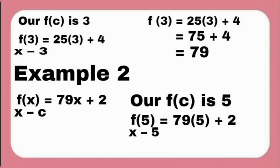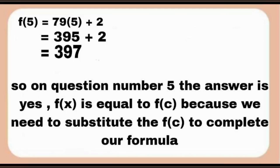Example 2: f of x is equal to 79x plus 2, where c equals 5. We substitute similarly: f of 5 equals 79 multiplied by 5 plus 2. First, we multiply 79 and 5 to get 395, then 395 plus 2 equals 397. So the answer to question number 3 is yes — the limit of f of x equals f of c, because we substitute f of c to complete the formula.